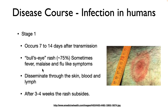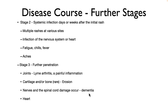Here's an example of the bullseye rash — this is the spirochete invading various tissues and causing inflammation. You will have fever, malaise, and flu-like symptoms, and these will dissipate, but the bacterium is not gone. It will then disseminate through the skin, blood, and lymph. After about three to four weeks the rash will subside. Stage two occurs when you have systemic infection — the bacterium has spread throughout the body, can be at multiple sites, and you'll get multiple rashes at those various sites.